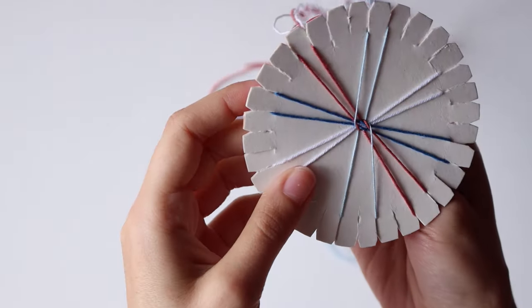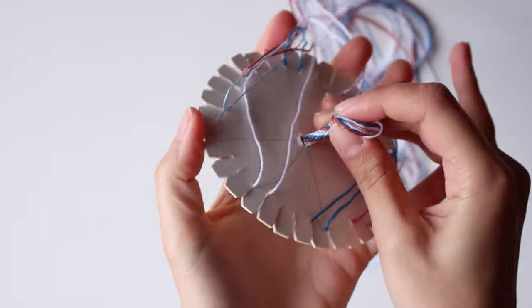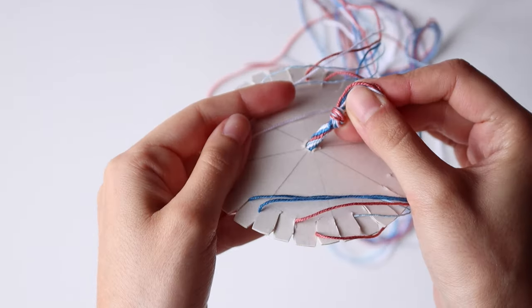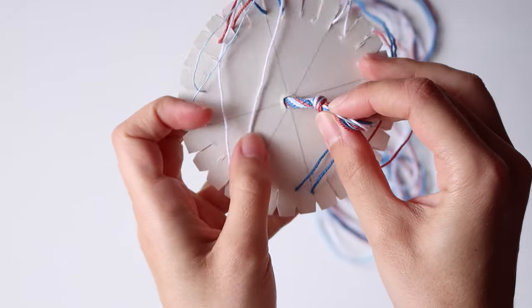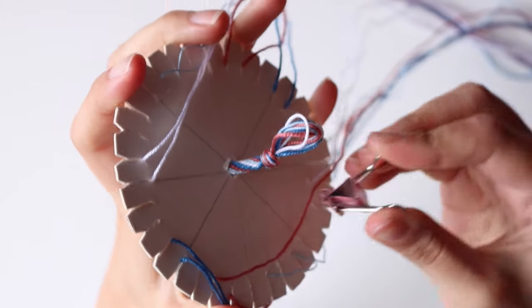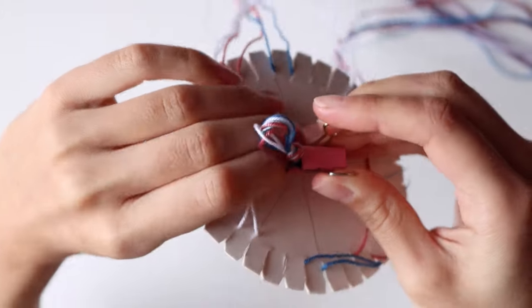Once you do enough rows, you'll start to see the bracelet come out on the other side. You can tug on it once in a while while you're making it to push it out or even hold it with a clip to keep it from coming up.